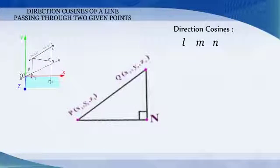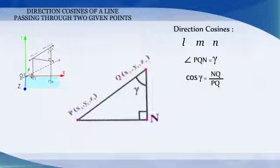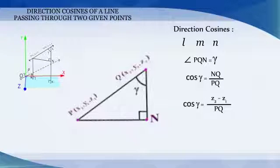Now, in a right angle triangle PNQ, angle PQN is equal to gamma. Therefore, cos gamma is equal to NQ divided by PQ which is equal to z2 minus z1 by PQ.